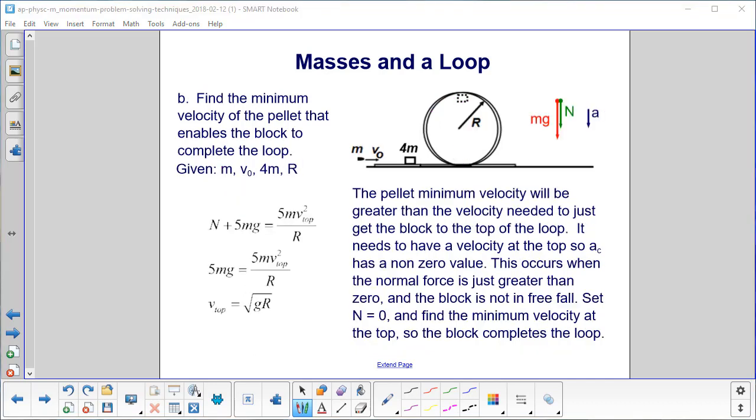Now we want the minimum velocity of the pellet that will enable the block to complete the loop. We use a slightly different logic scheme here. And first of all, we have to draw a free body diagram. So that's what we have over here. This is at the top of the loop, right there.